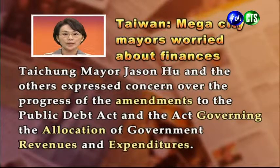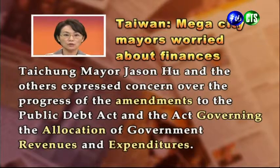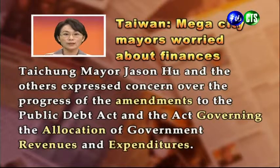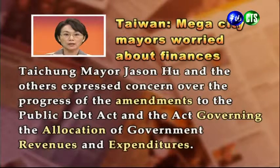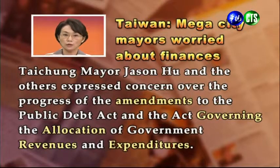底下提到兩個法案。第一個是Public Debt Act，公共債務的法案。另外一個法案是：Act governing the allocation of government revenues and expenditures。Government revenues就是政府的收入、稅收；expenditure就是支出；allocation就是分配；governing是管理。關於政府稅收收入還有支出這樣分配的相關法案。這兩個法案可能都在修正當中，所以這些市長非常關心修正案的進度。